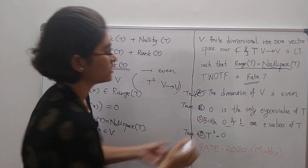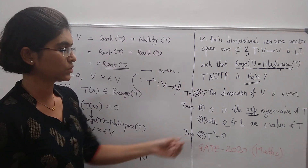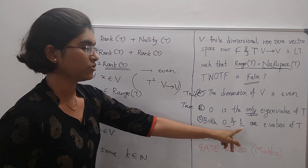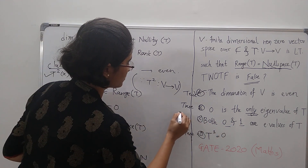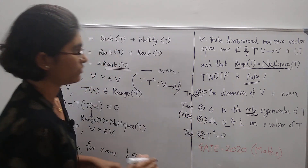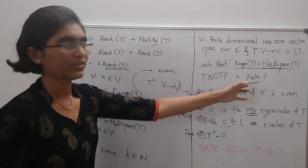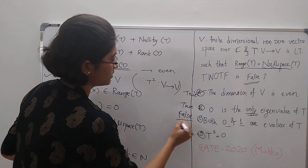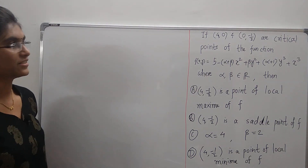Since 0 is the only eigenvalue of T, the eigenvalue cannot be 1. Hence option C — that both 0 and 1 are eigenvalues of T — is false. And we were asked which of the following is false, so option C is the correct answer. Let us solve another question.